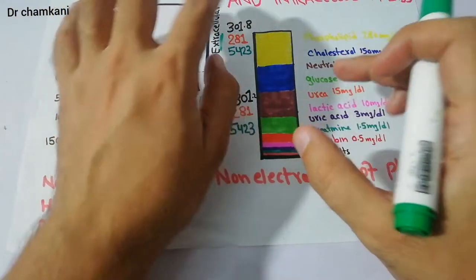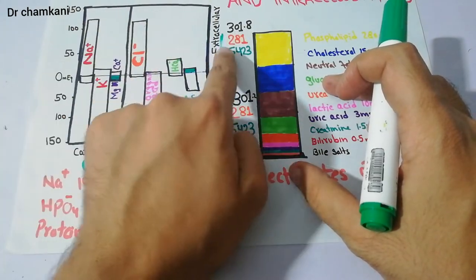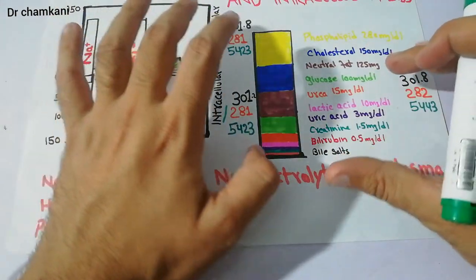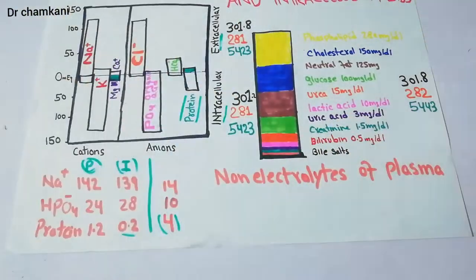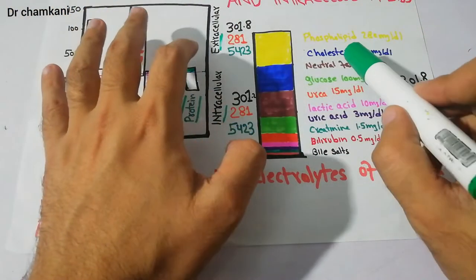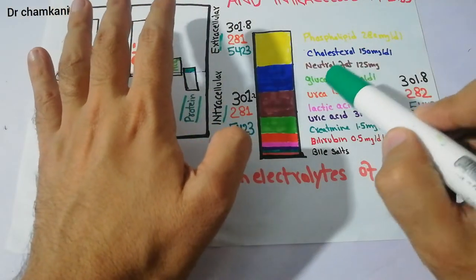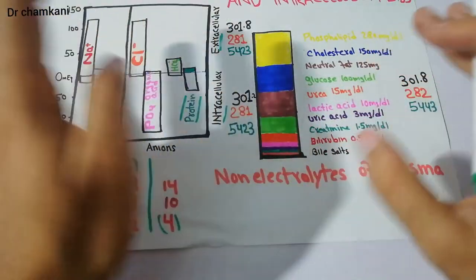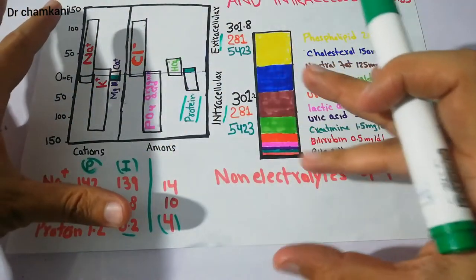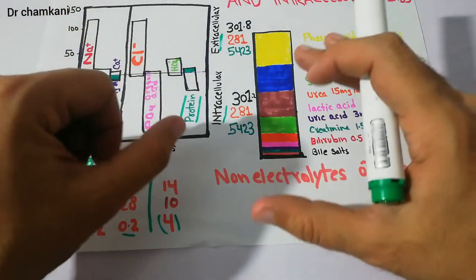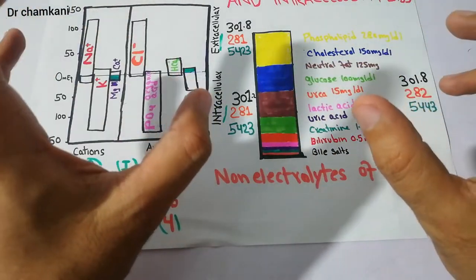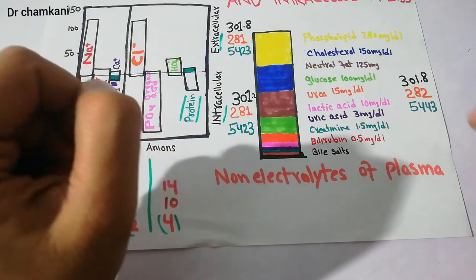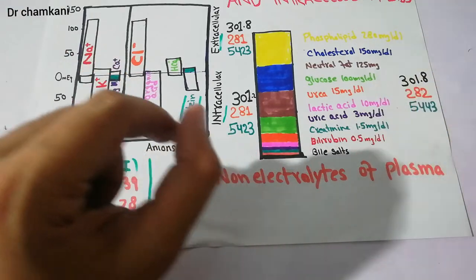The extracellular compartment consists of the interstitial fluid as well as the plasma. Inside the plasma there are a lot of electrolytes and non-electrolytes and many substances like cholesterol, glucose, urea, lactic acid, uric acid, creatinine, bilirubin, and bile salts. These different substances present in the plasma and their osmotic activity will basically determine the osmotic pressure and osmolarity of the plasma.